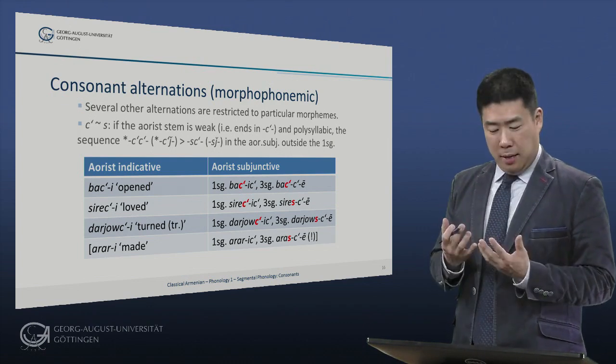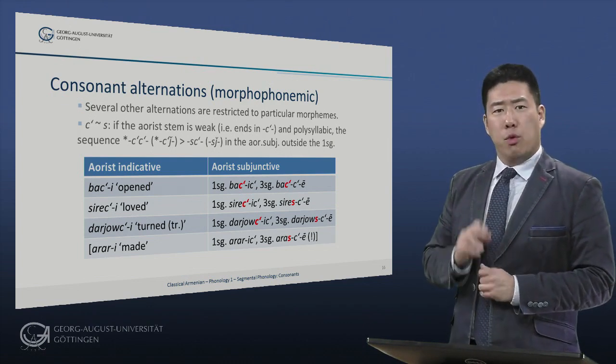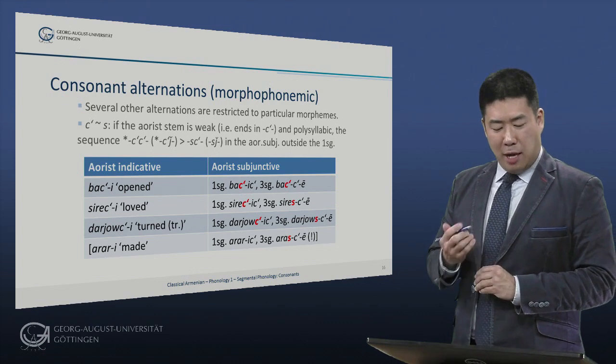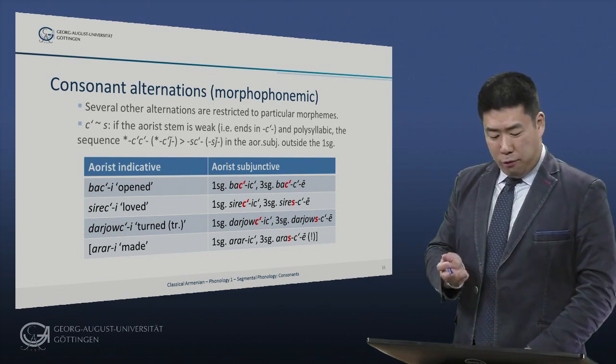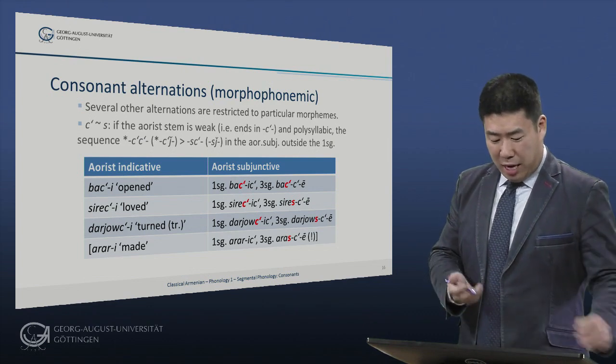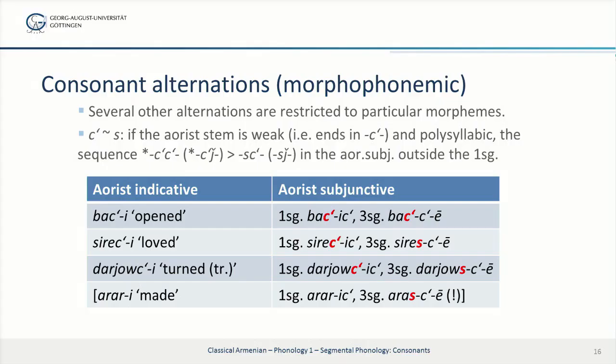And consists of more than one syllable, the sequence ts-ts is dissimilated to ts-s in all forms of the aorist subjunctive outside the first singular. In the first example, there is no such dissimilation: we have 'ba-tsi' meaning 'I opened', aorist subjunctive / future 'ba-tsi' meaning 'I will open', but third singular 'ba-tsi' with a sequence of two ts sounds, meaning 'he or she will open'.